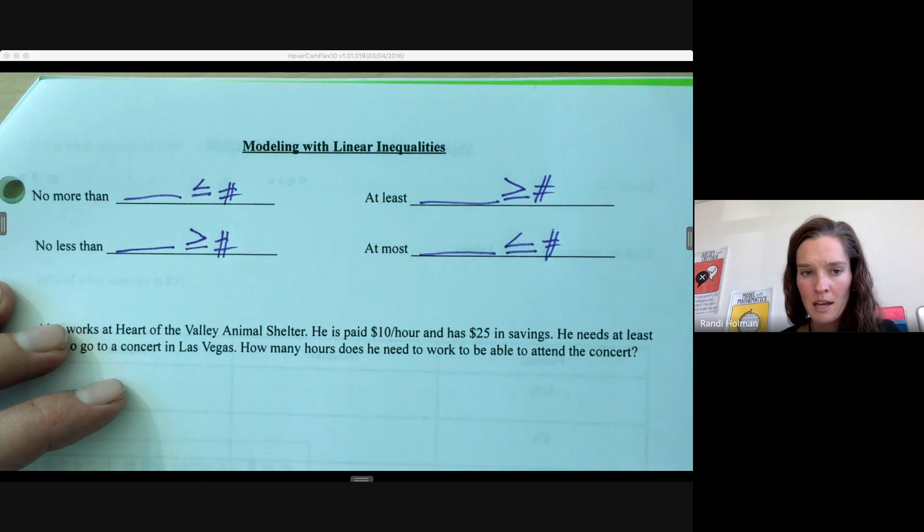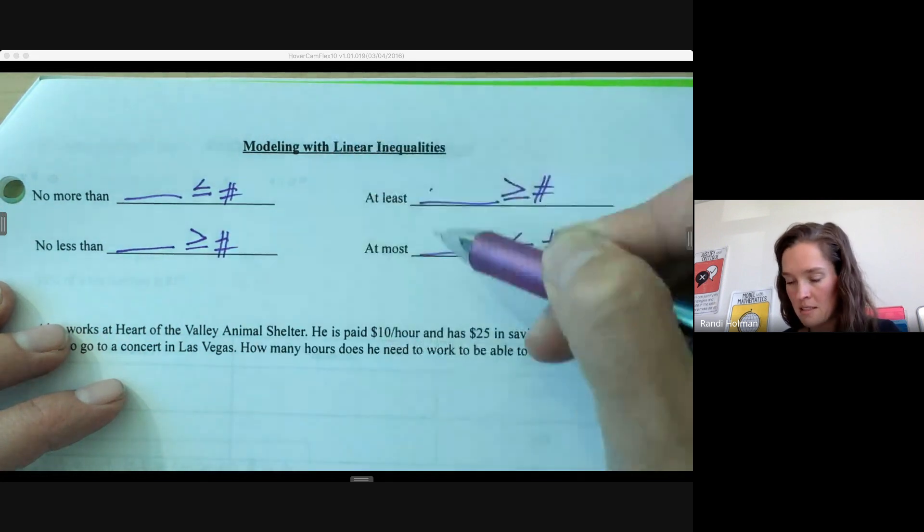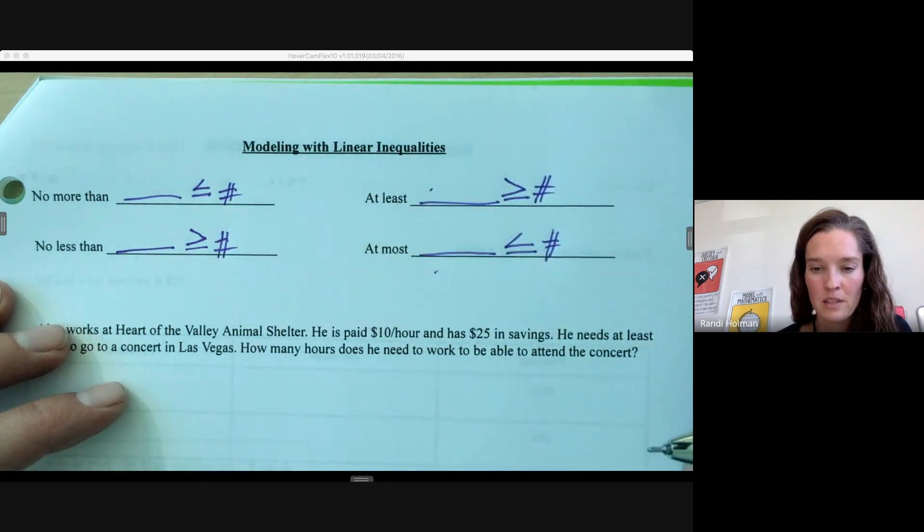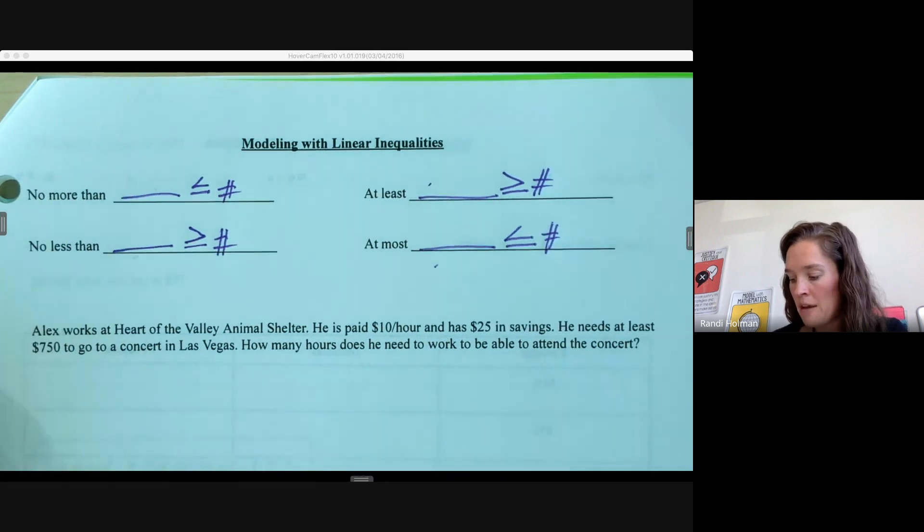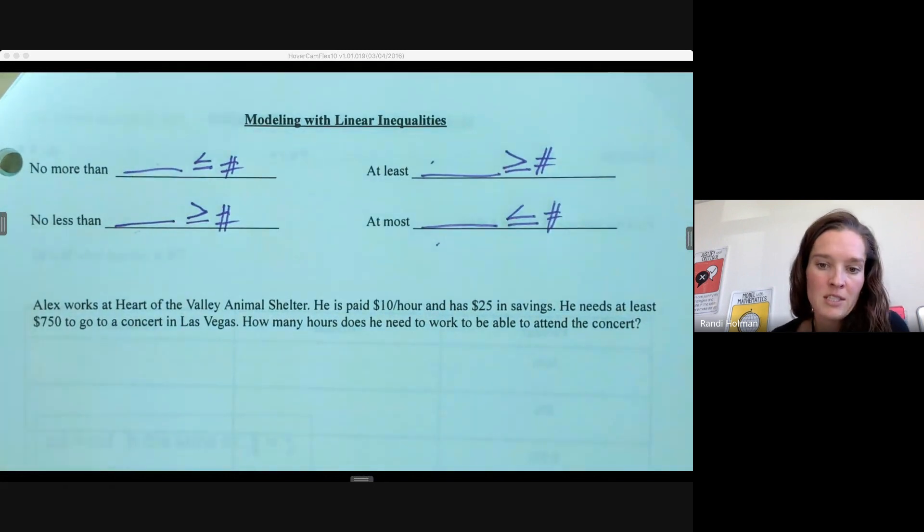Okay, so our variable is always going in this expression on the left. If we're writing these inequalities, we're thinking just the same way as writing our equations. We're still going to follow that process: define the variable, write the inequality, solve, and then interpret back to the situation.